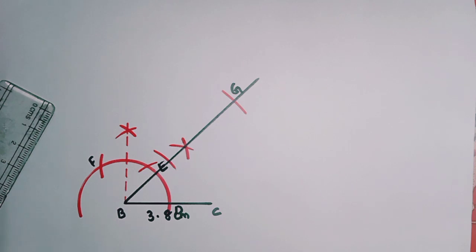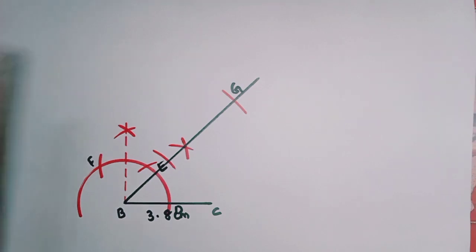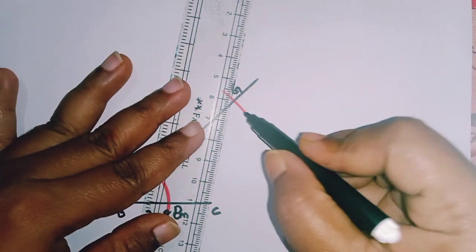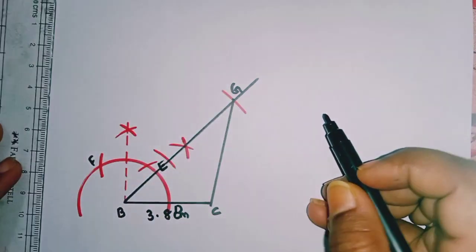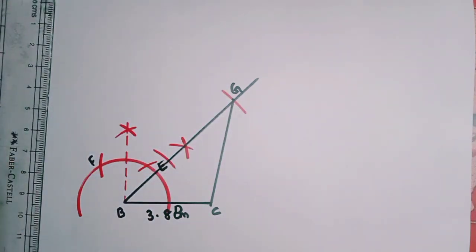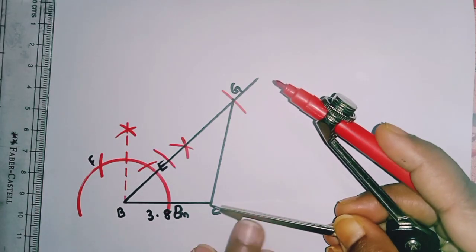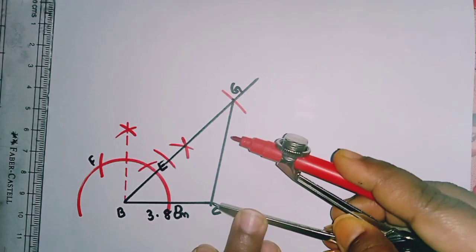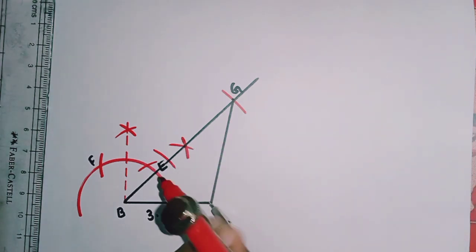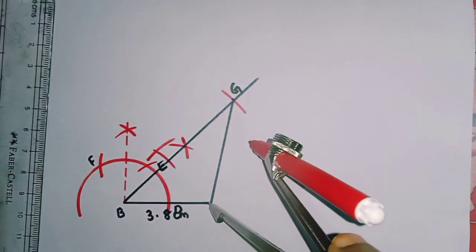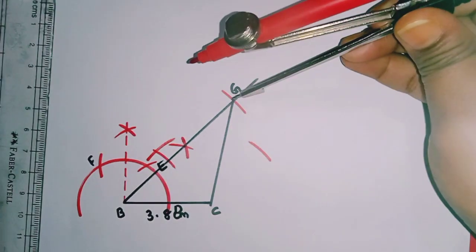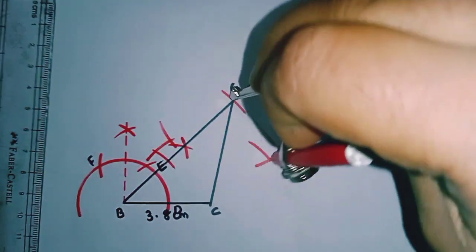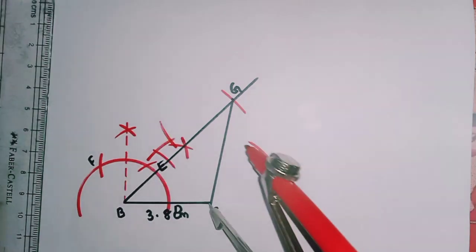The next step is you have to join CG. Now join CG. Once when you join this, now you are going to draw the perpendicular bisector for CG. So when you are drawing for CG, you have to take more than half of CG. Draw an arc here and here. And with G as center, draw another arc. Extend the arc if they are not meeting.